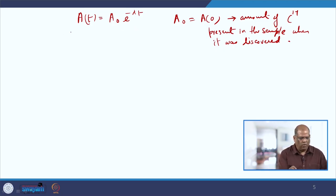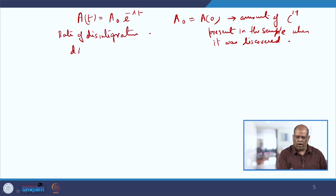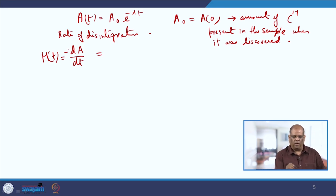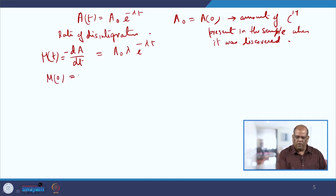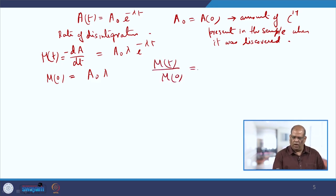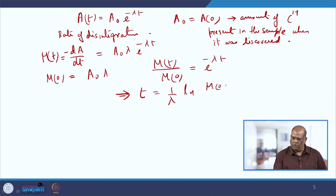If we want to calculate the rate of disintegration, we find dA/dt, which we name m(t). Since the rate is decreasing we apply a negative sign, giving m(t) = A₀ λ e^(−λt). Then m₀ = A₀λ, and the ratio m(t)/m₀ = e^(−λt). From this, t = (1/λ) ln(m₀/m(t)).